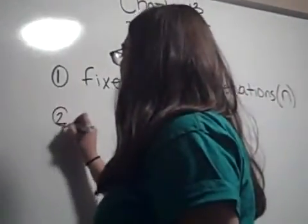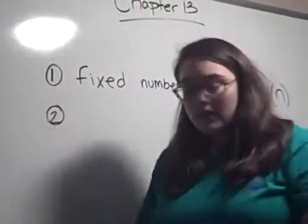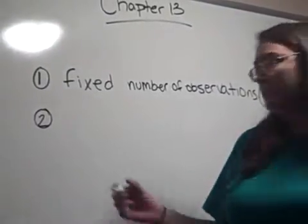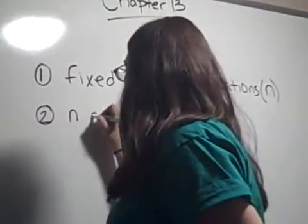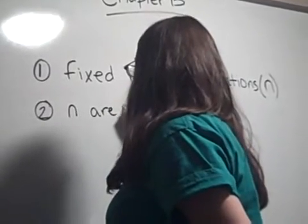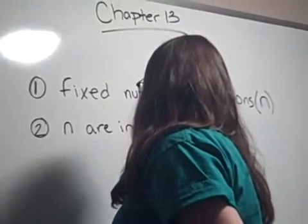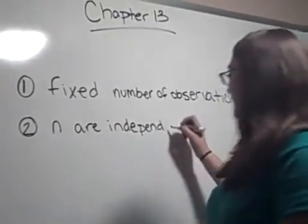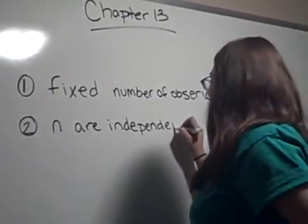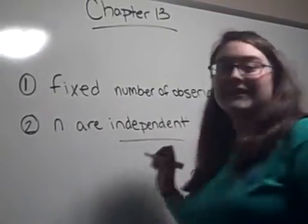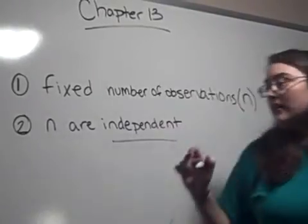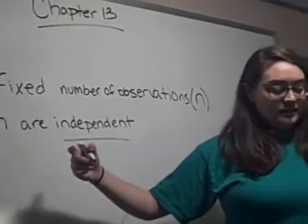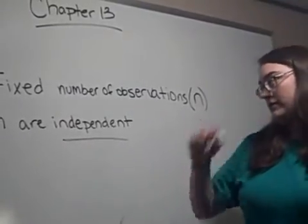The second rule is that all of the observations are independent of each other, meaning that one observation does not depend on another observation.